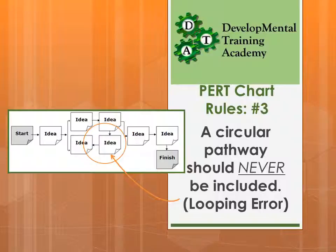The third rule: a circular pathway should never be included — this is called a looping error. If you have a look at this project, we start off fine, go through a series section, then into two parallel sections, but then that leads back towards an idea at the front, and what you end up with is a loop that is very difficult to get out of. That is a looping error and it's a real problem on a project because people get stuck and can't move on to the next task effectively.